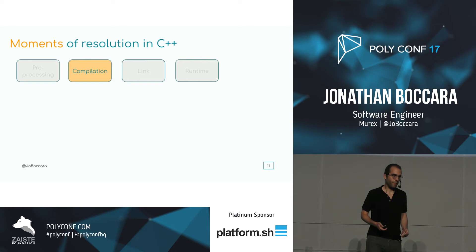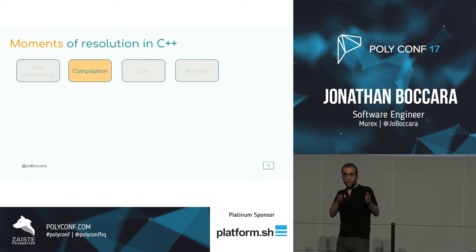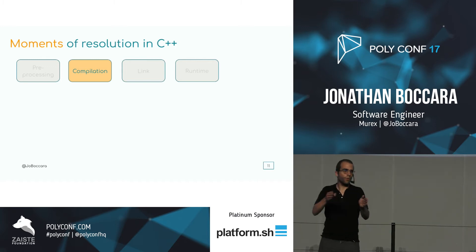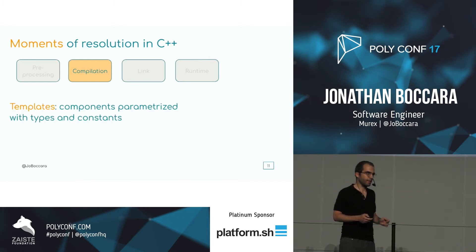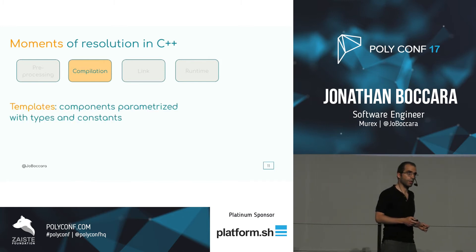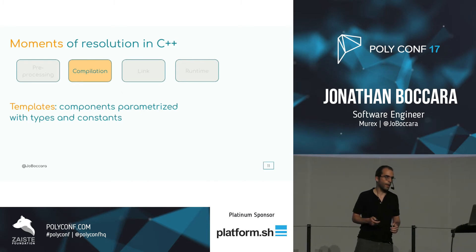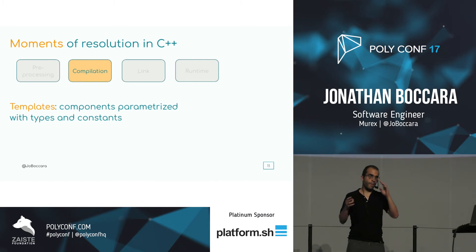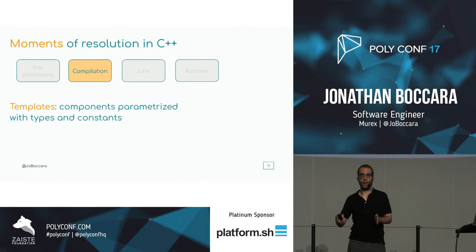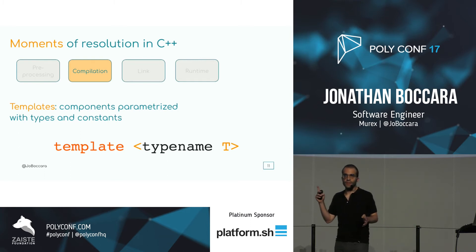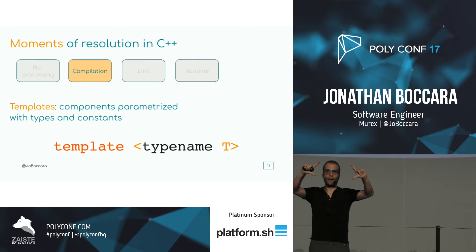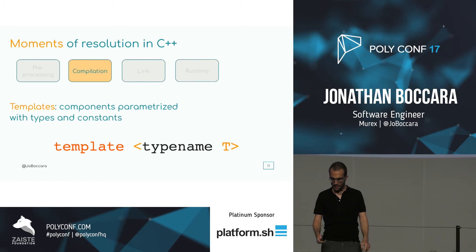The next step of source code is compilation, where the preprocessed code — which is still text — is transformed into binary code. One way to do polymorphism at that stage is to use templates, which is one of the most powerful features of C++. Templates can take a parameter that's known at compile time, like a type or a constant. The syntax is written 'template' with angle brackets.